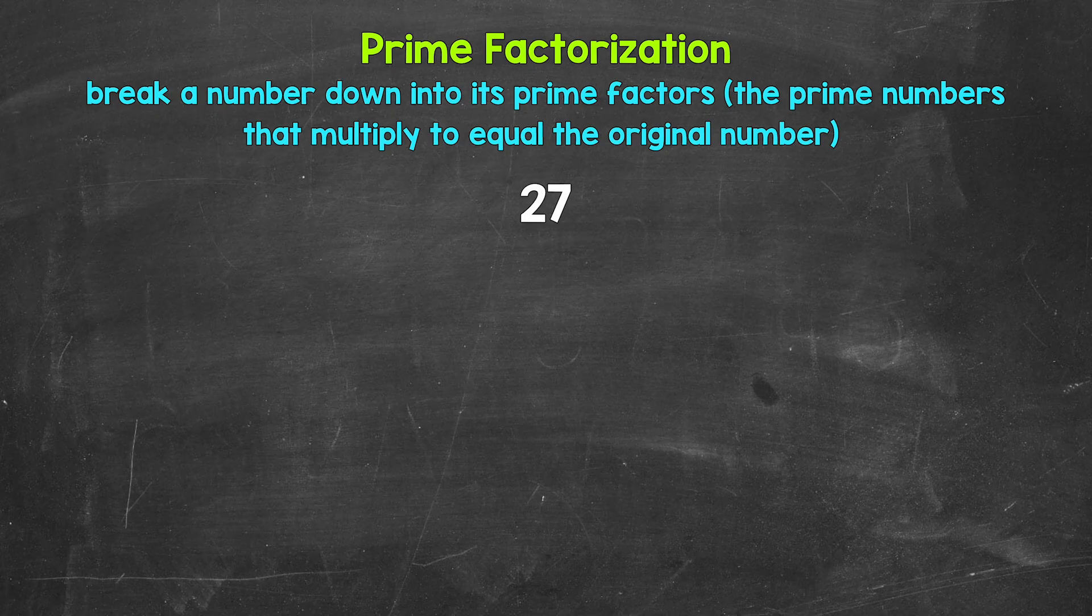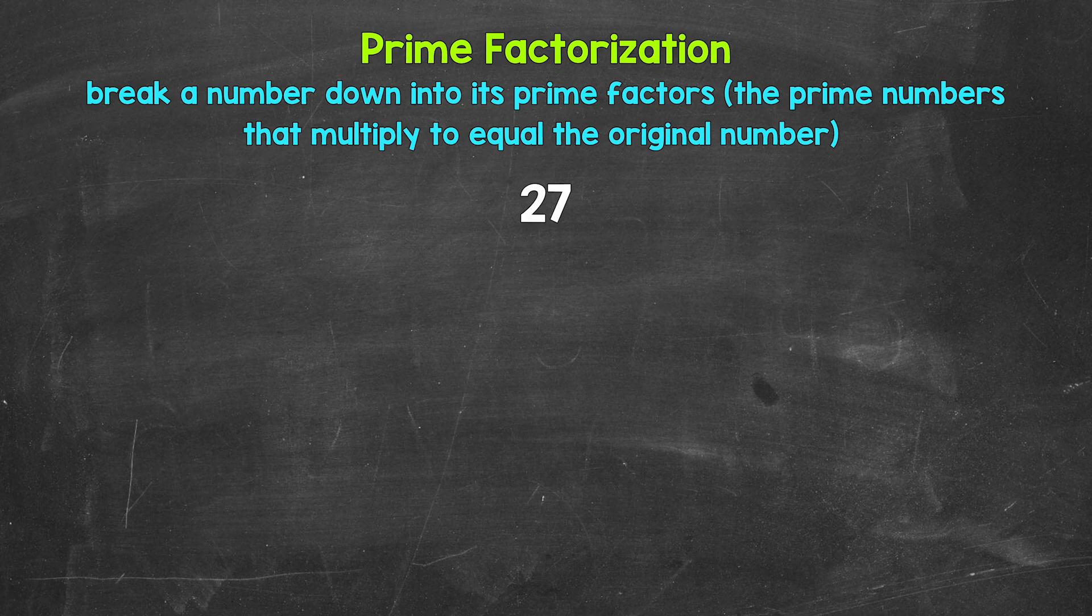So we are decomposing a number, breaking a number down to only prime numbers. Looking at 27, we need two factors to start breaking this down. Two numbers that multiply to give us 27.